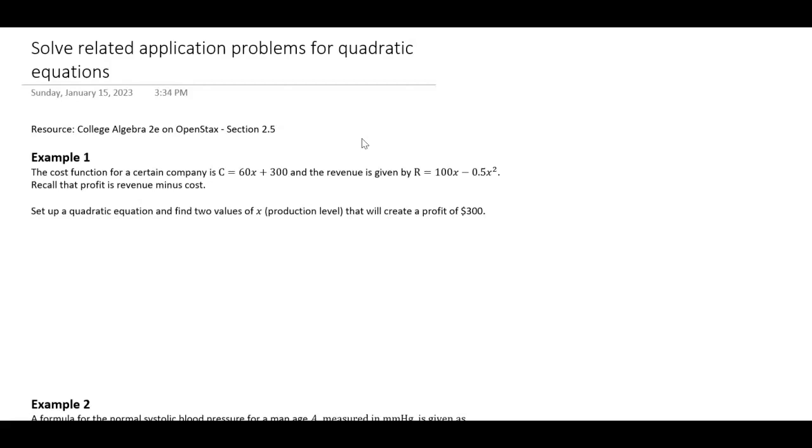Let's go ahead and look at this business example. We have a cost function C = 60x + 300, and then we have a revenue function R = 100x - 0.5x².